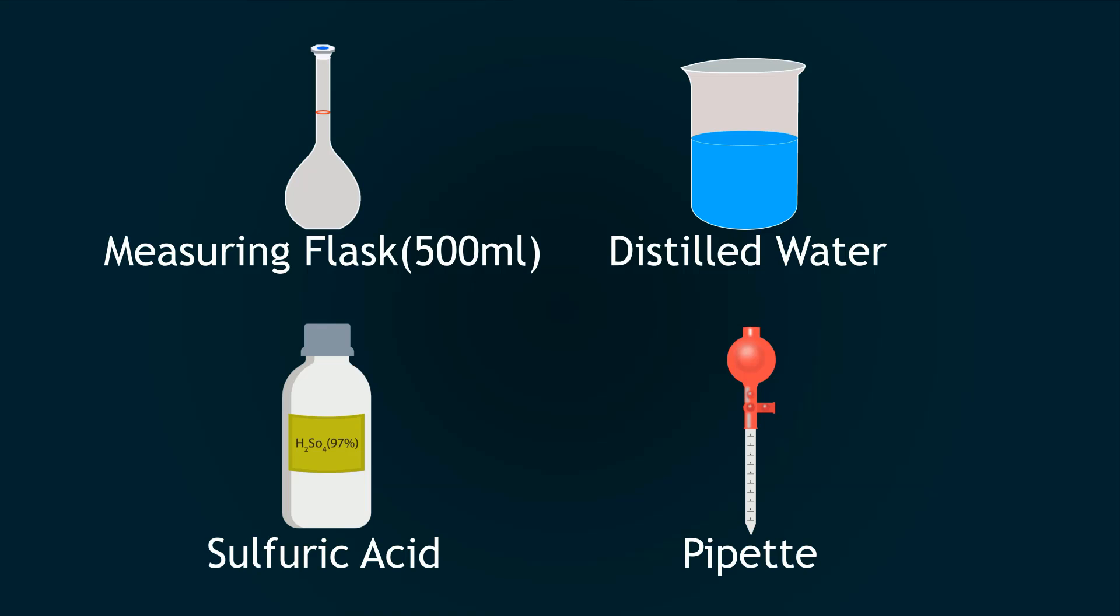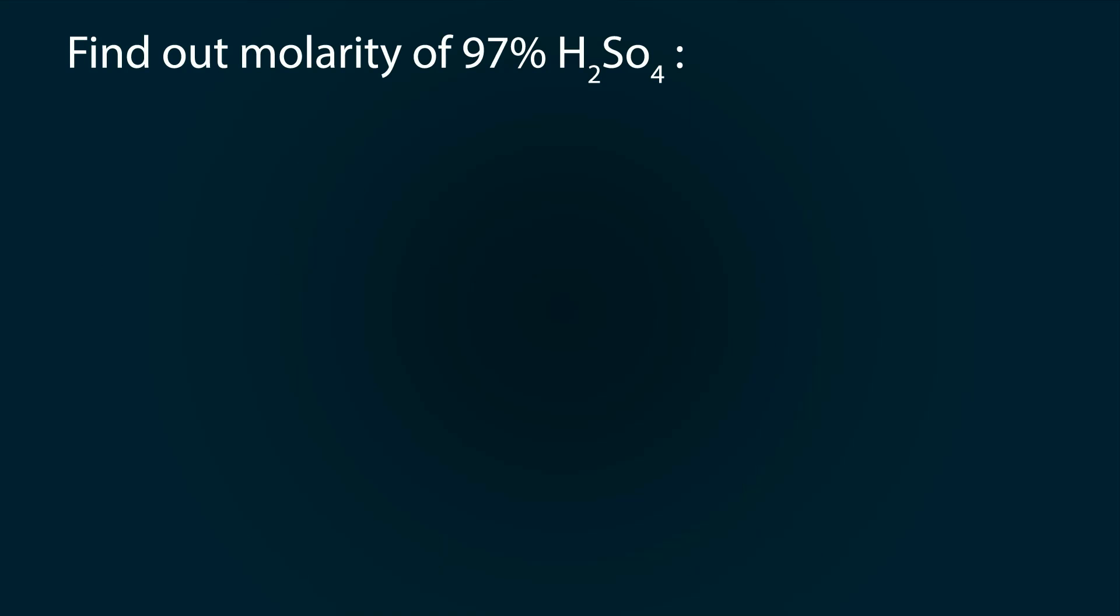The required apparatus and chemicals include: volumetric flask of 500 milliliter, distilled water in a beaker, a sulfuric acid bottle, and a pipette.